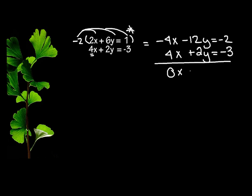Negative 12y plus 2y is negative 10y. And negative 2 minus 3 is a negative 5. And now I want to solve for y. So I'm going to divide by negative 10.